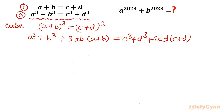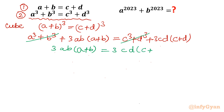So I cancel those two equal terms from both sides. What is left is 3ab times (a plus b) equals 3cd times (c plus d). Cancelling 3 from both sides gives us ab times (a plus b) equals cd times (c plus d).